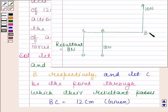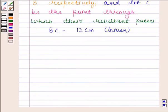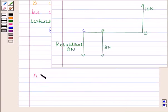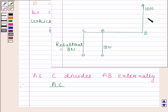We have to find AB. Now as C divides AB externally, therefore AC by 10 is equal to BC by 18. This implies AC into 18 is equal to BC into 10.